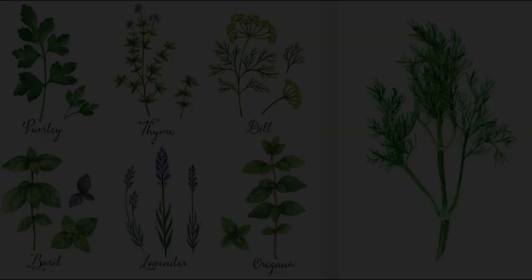Dill can be over 3 feet in height. Its stem is striated, its leaves are thin strips with a pleasant scent. The plant produces small yellow flowers in umbels, and brown, oval fruits.